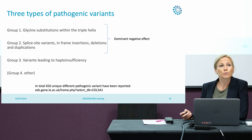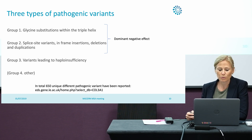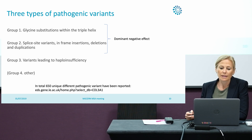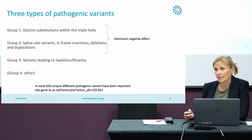These two groups of variants cause a dominant negative effect, and I will explain more about that later. The third group are variants that lead to haploinsufficiency.